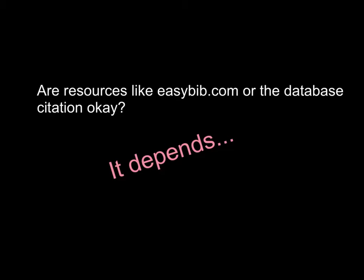The thing with easybib.com is it's only as smart as you let it be. If you just plug in a web address and see what it spits out, I'm not going to be able to track your resource. But if you go through all the steps in EasyBib and plug in author name, article name, publication name, database name, issue, volume number, year of publication, pages — all that stuff — it'll spit out everything in more or less the right order. I can't guarantee those resources will do exactly what you want, but they're not bad if you do a little bit of work at the front end.